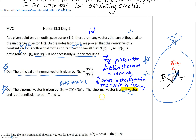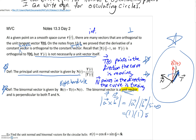Let me quickly prove that B is a unit vector. The length of a cross product is the length of A times the length of B times the sine of the angle between them. The unit tangent vector and unit normal vector both have a length of 1, and the angle between them is 90 degrees, so sine of 90 is 1. Therefore the length of T cross N equals 1.